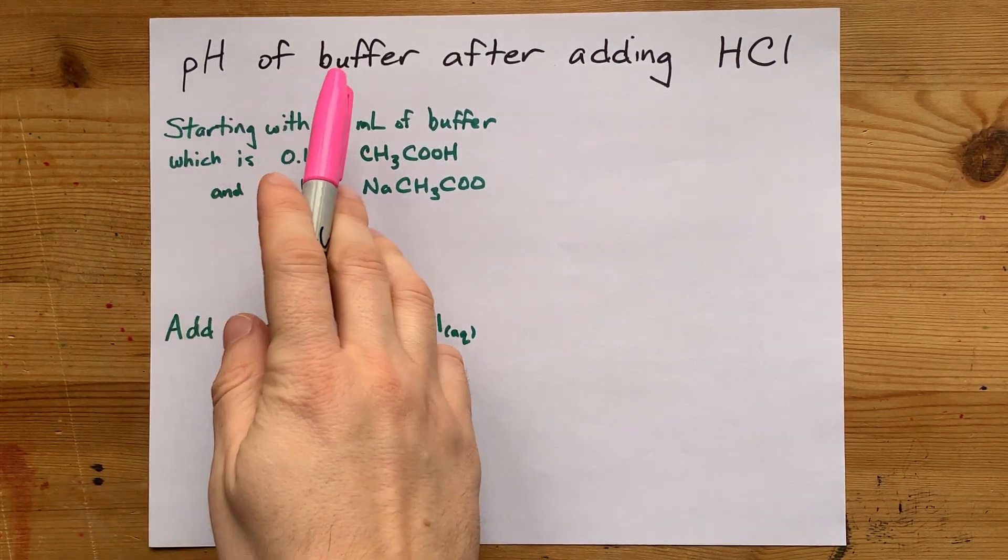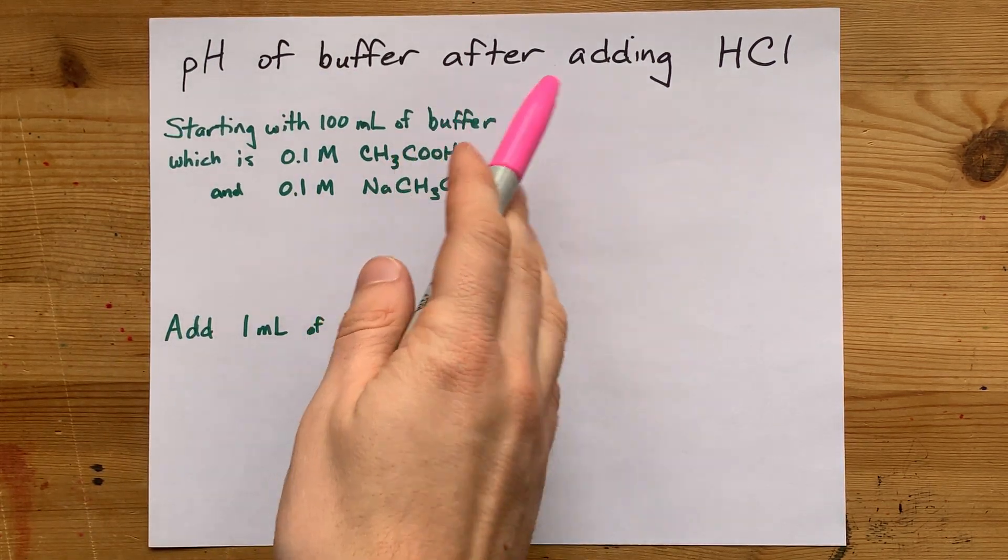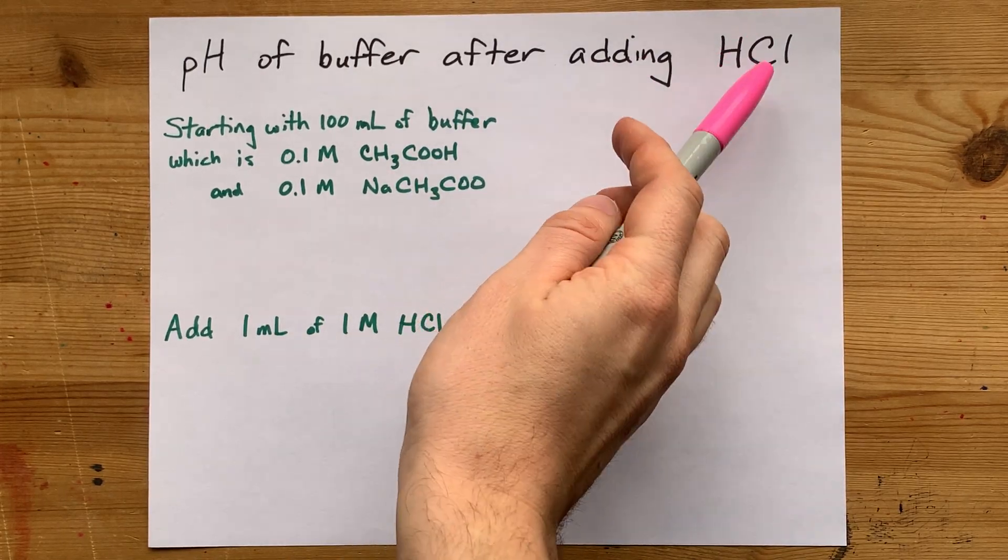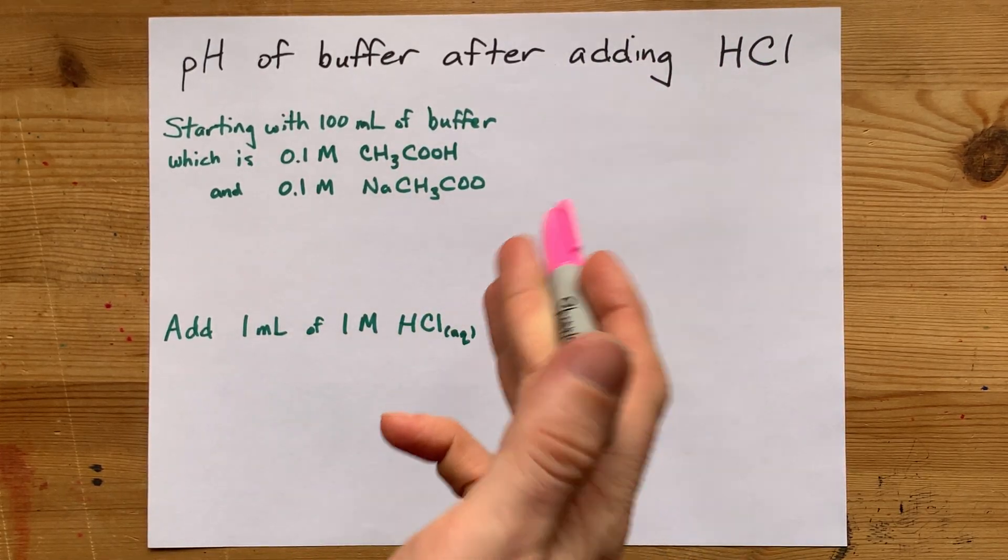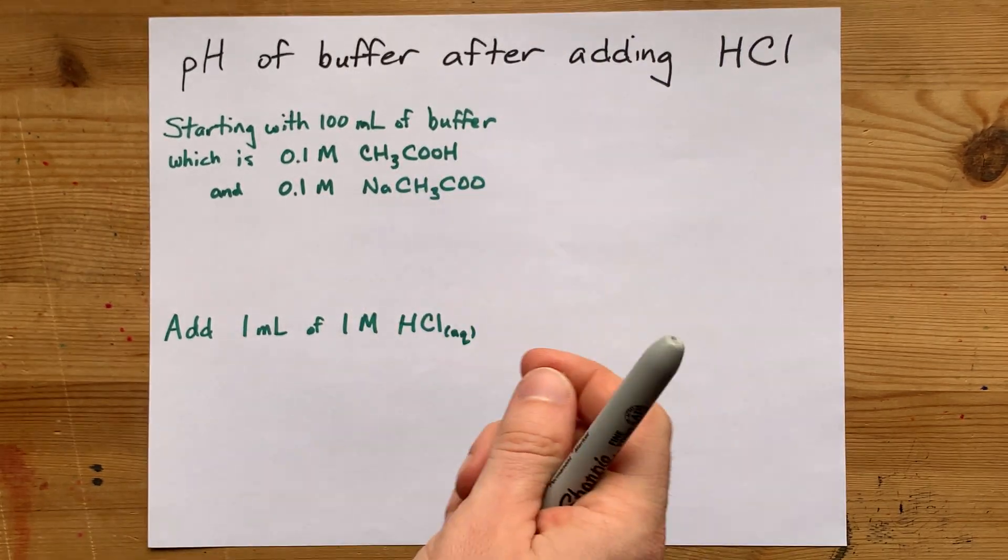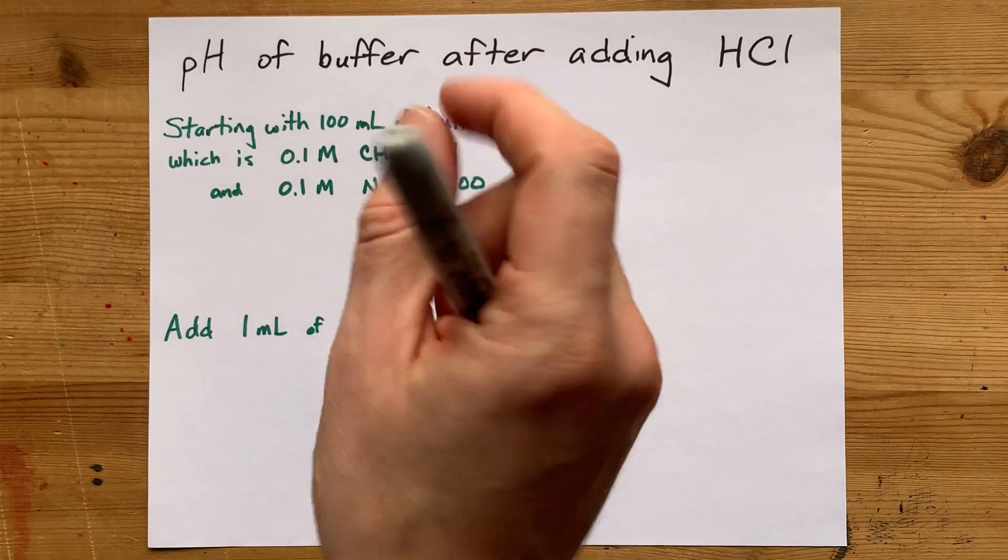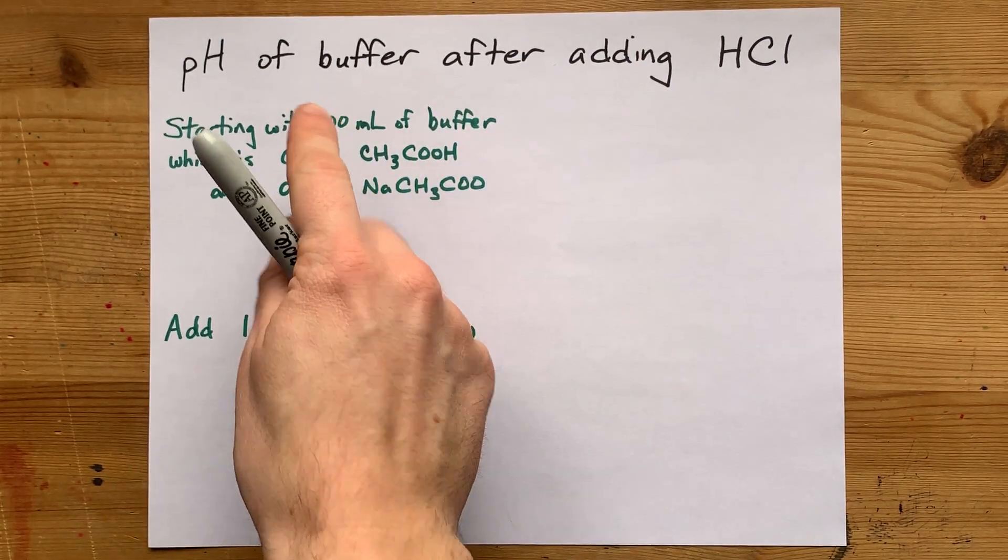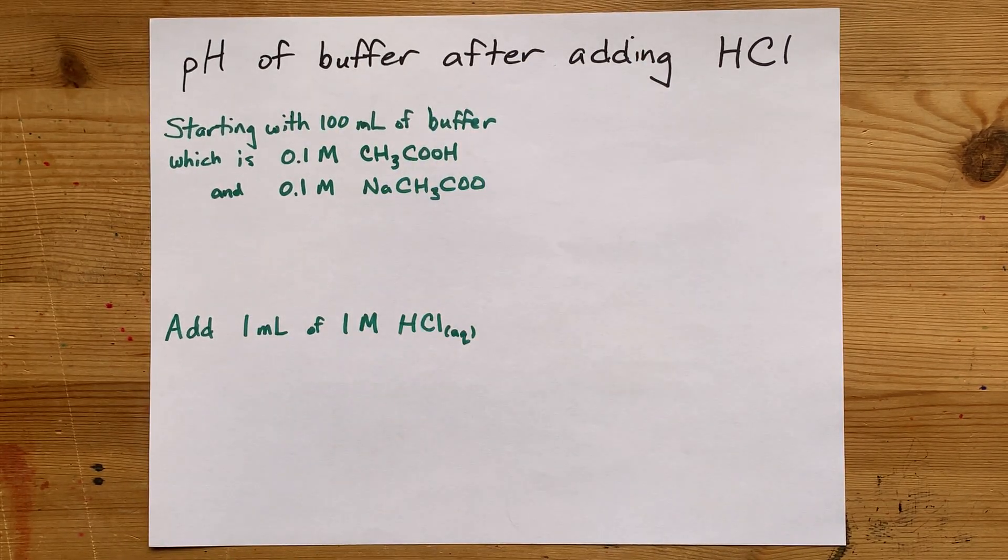What happens to the pH of a buffer solution after you add a small amount of strong acid HCl? Well, because you're adding an acid, the pH is going to go down, but not by as much as you might think, especially considering it's a strong acid, because buffers do resist changes in pH.